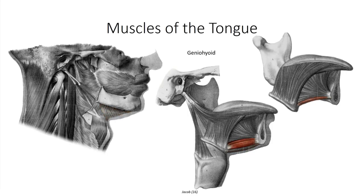The geniohyoid muscle is another suprahyoid muscle. It is a cylindrical muscle found superior to the mylohyoid, originating off the mental spine on the internal surface of the mandible and inserting on the superior surface of the hyoid bone. It receives innervation from branches off the first cervical spinal nerve, which forms the anterior loop of the ansa cervicalis that fuses with the hypoglossal nerve. The geniohyoid works in synergy with the mylohyoid in either elevation of the hyoid or depression of the mandible.